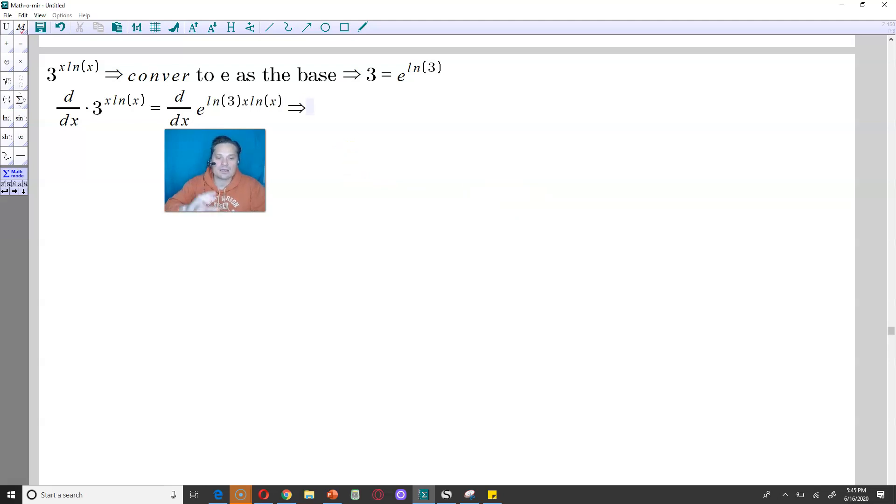So that means the following when I differentiate. First, I copy that e to the ln of 3 x ln of x. I copy that part exactly as written. In other words, it's e to the ln of 3 times x ln of x. And then I multiply by the derivative of the exponential expression, which would be the derivative of ln of 3 and then x ln of x.